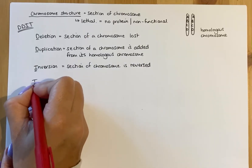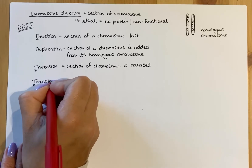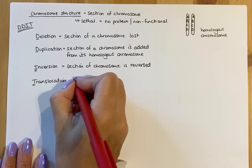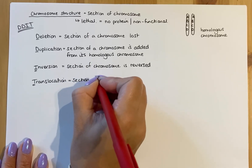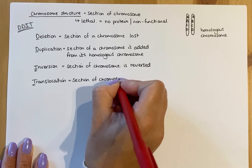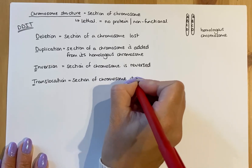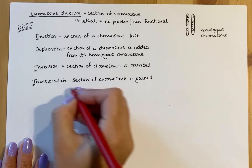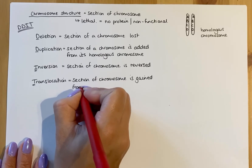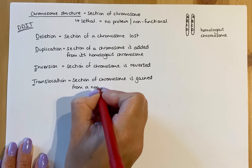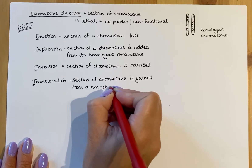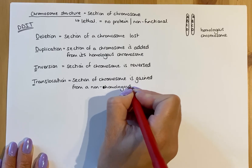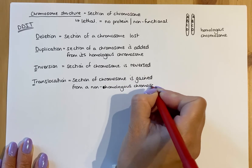The final letter in DDIT is T for translocation. A section of a chromosome is gained, but unlike duplication, it comes not from the homologous chromosome but from a non-homologous chromosome — a completely different chromosome. So the section gained would have different gene letters representing a different chromosome's content.